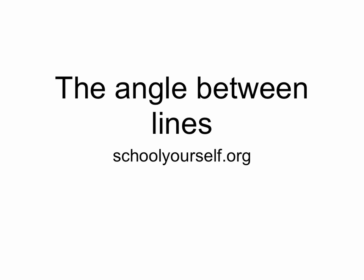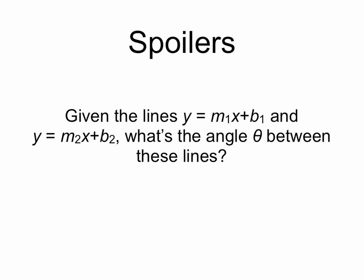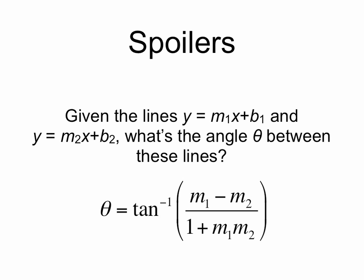Finding the angles between lines. Given two lines — the first line y equals m1x plus b1, and the second line y equals m2x plus b2 — what's the angle theta between these lines? The answer is that theta equals the arctangent of m1 minus m2 over 1 plus m1m2, which we'll prove here.